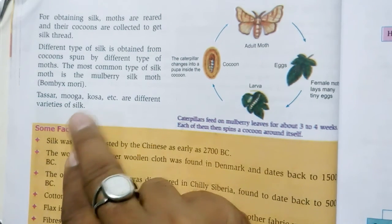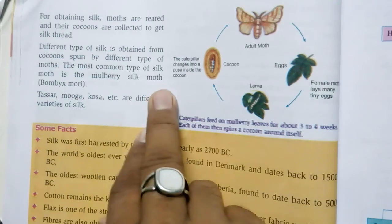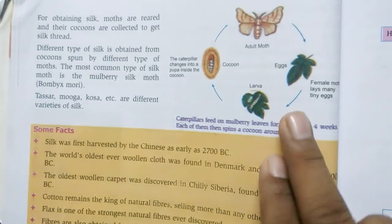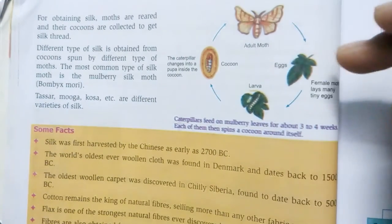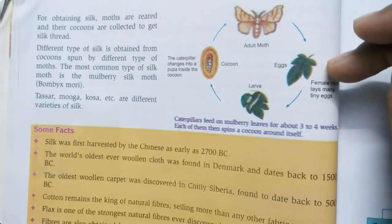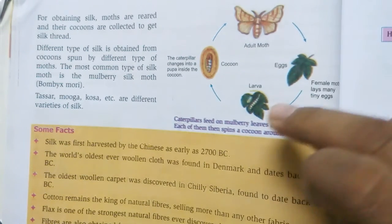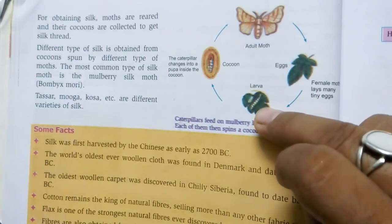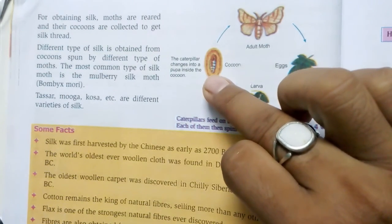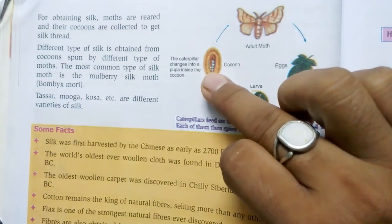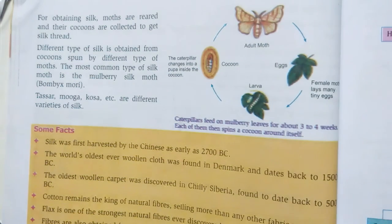The most common type is the mulberry silk moth. You can see the diagram showing the whole process of the silk moth life cycle. Thank you.